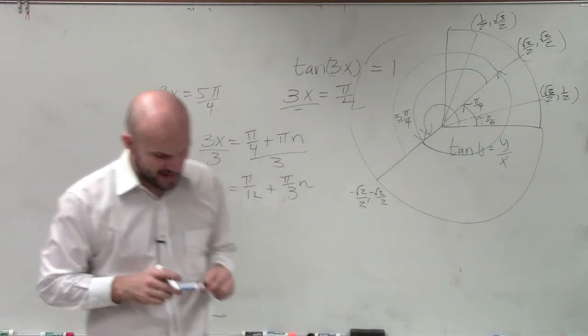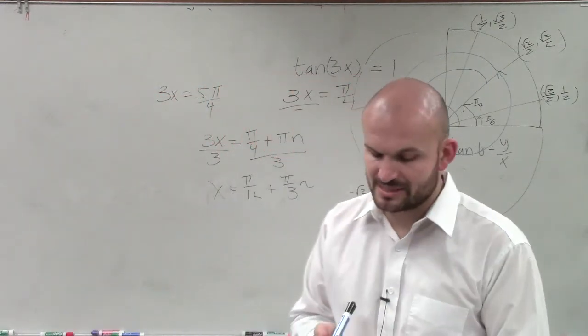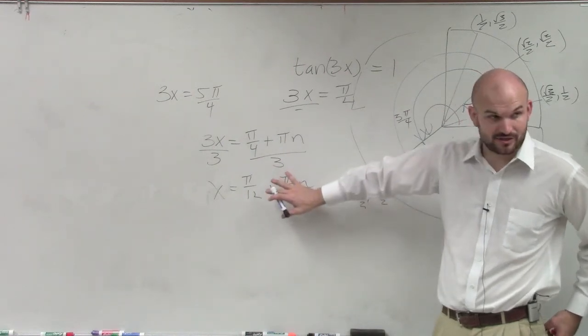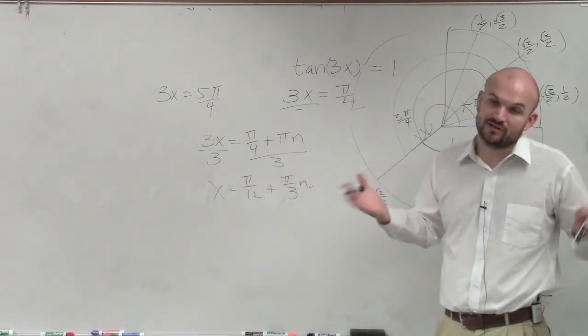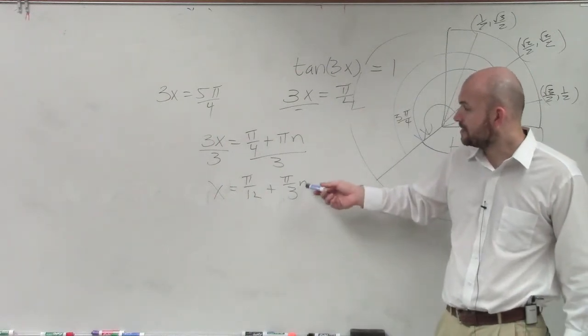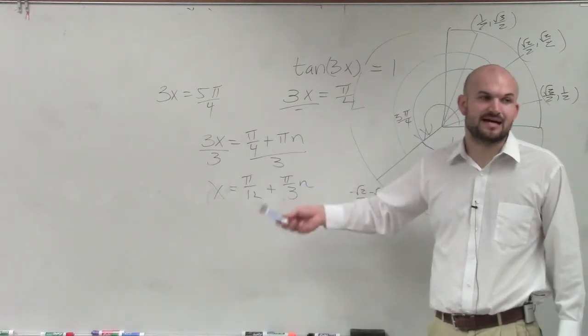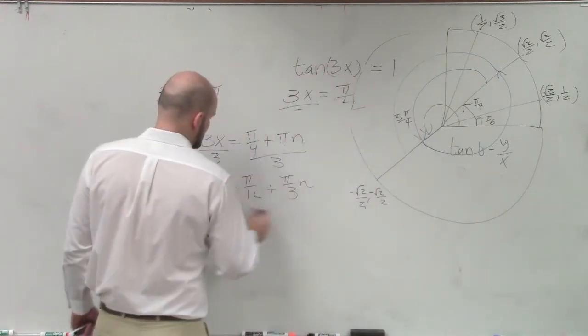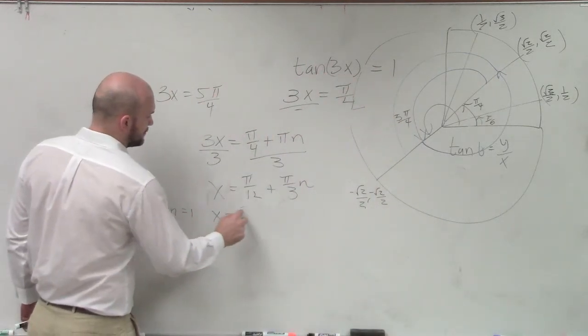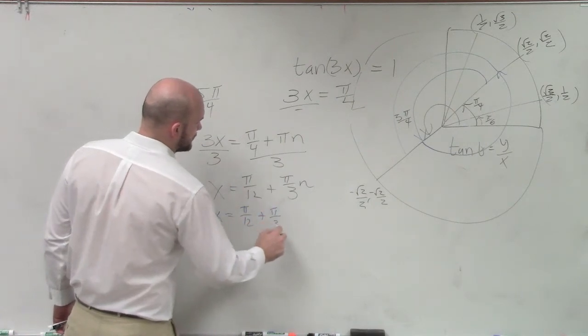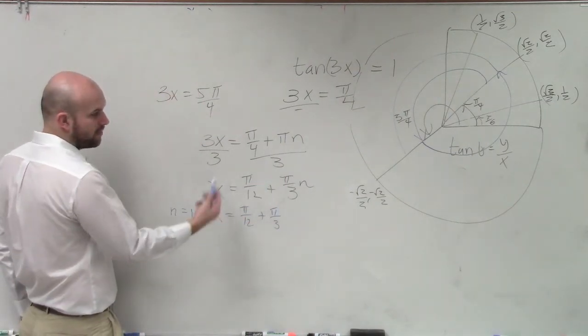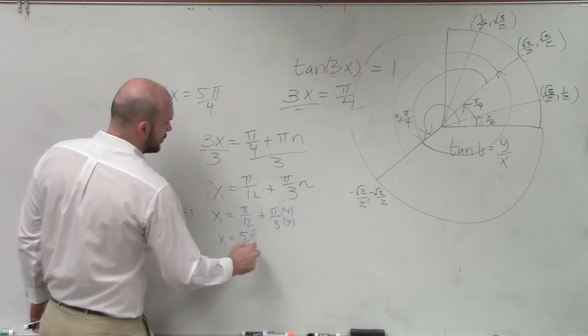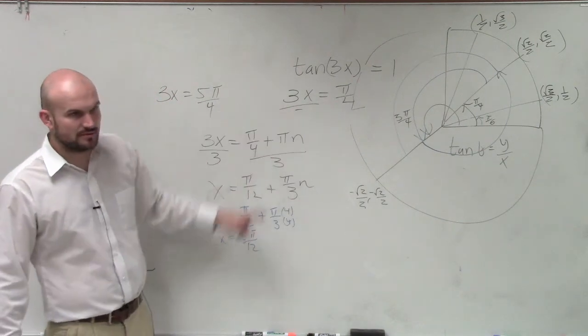Now, if you guys were asked to find the solutions between 0 and 2π, what you'd have to do now is add numbers of n. This is the answer because it just says find all your solutions. But if I said find only solutions between 0 and 2π, what I'd have to do is plug in numbers for n and see if that answer falls between 0 and 2π. For instance, let's pretend n equals 1. So x equals π/12 plus π/3, because 1 times π/3 is π/3. Combine those, multiply by 4/4, so x would equal 5π/12. Would that be a solution between 0 and 2π?